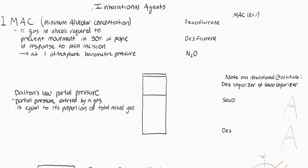Here we're going to talk about inhalational agents — your anesthetic gases like sevoflurane, desflurane, and nitrous oxide. These are all the anesthetics we can use with our anesthetic machine to either induce or maintain a state of general anesthesia. These are very useful because we have a reliable way of predicting someone's depth of anesthesia: the standardized scale of one MAC.